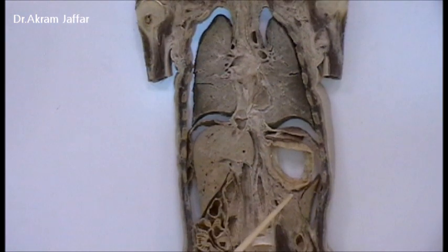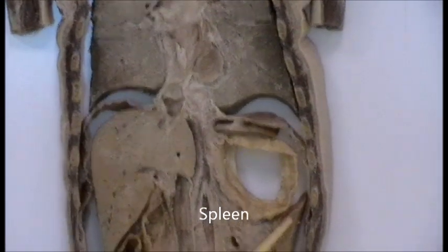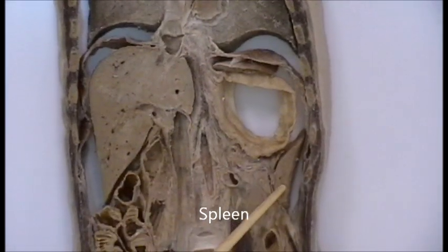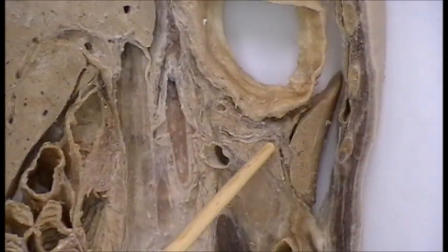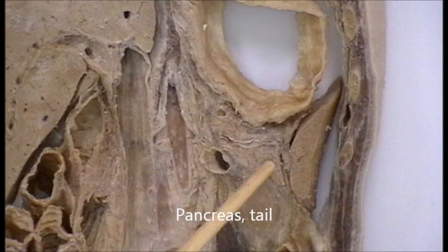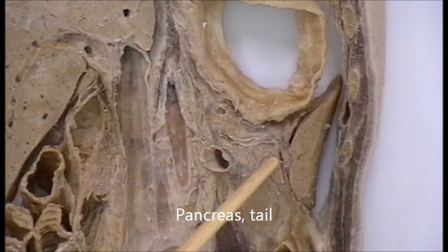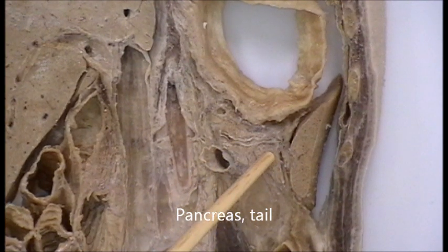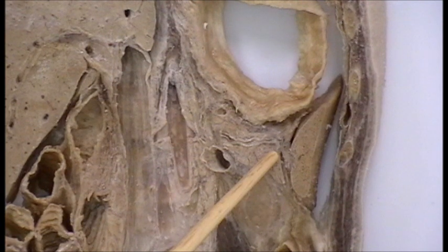On the left side, we can also notice part of the spleen. Also related to the hilum of the spleen, you can see part of the pancreas — this is the tail of the pancreas, which approaches the hilum of the spleen.